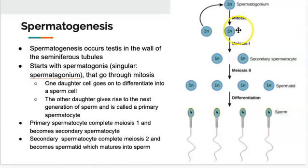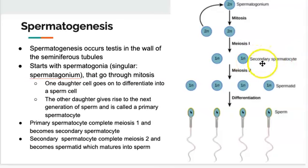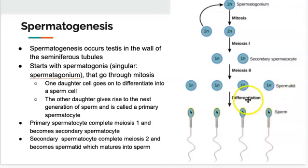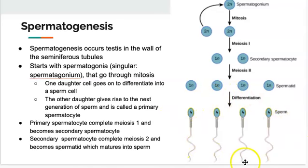This primary spermatocyte, once it goes through meiosis one, produces daughter cells called secondary spermatocytes. Once the secondary spermatocytes go through meiosis two, they become something called spermatids — a very immature sperm that doesn't have its tail yet. It will then mature or differentiate, creating its tail and structure to become what we know as mature sperm.